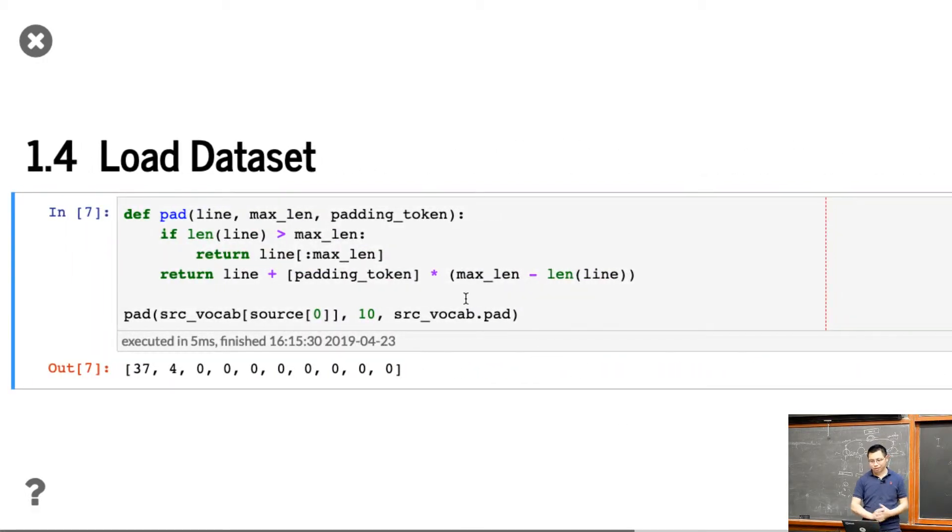So then, also padding. We want to pad all this. We pick up a line, give a maximum length. Similar to before, if it's larger than the maximum length, we just drop some words. If it's less than, we just pad with the padding token here. So if we're given the source sentence, we pad them. The source sentence only has two words, and we pad them with a bunch of zeros at the end to get to 10. So that's what we did before.